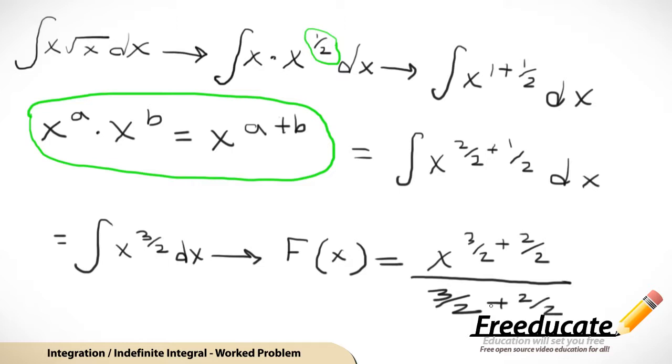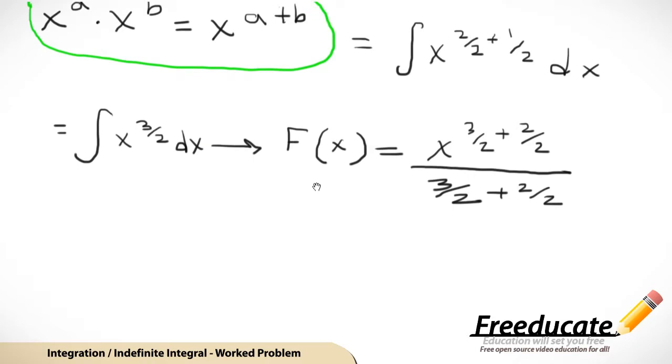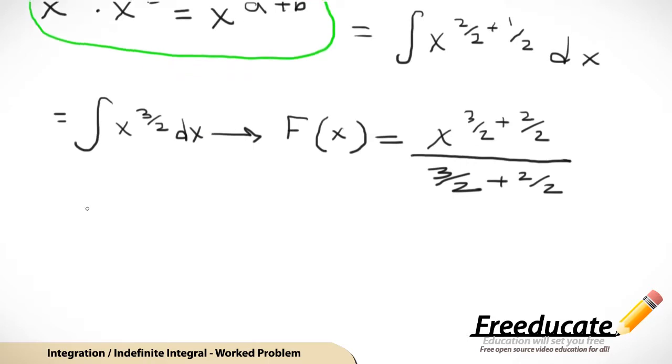So, with that being said, all we have to do is combine some stuff and we'll be good to go. So, capital F of x, our anti-derivative is just going to equal x to the 5 halves all over 5 halves plus c. And I should have had that plus c up here for the last step, but just make sure you include it because it holds for any indefinite integral.